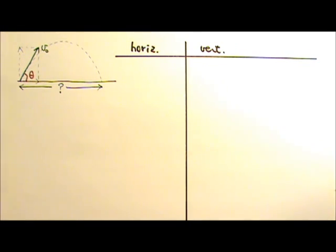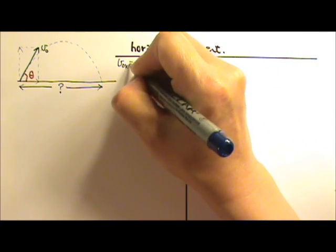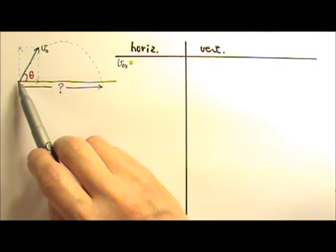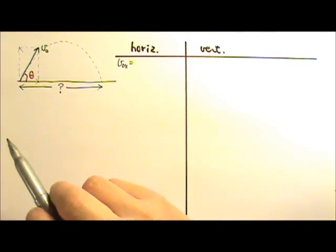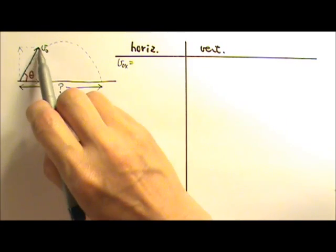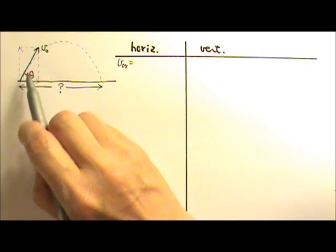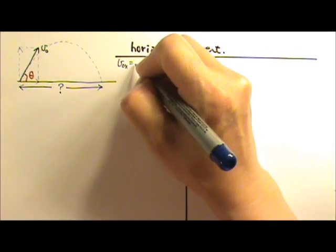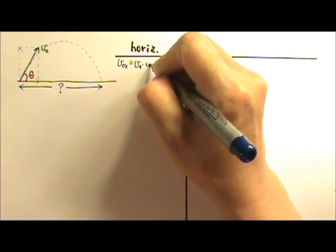So the horizontal component of the velocity, the initial velocity, is adjacent to the angle which is related to cosine. So the V₀ will be the slanted velocity, the hypotenuse times cosine. So this is V₀ times cosine theta.